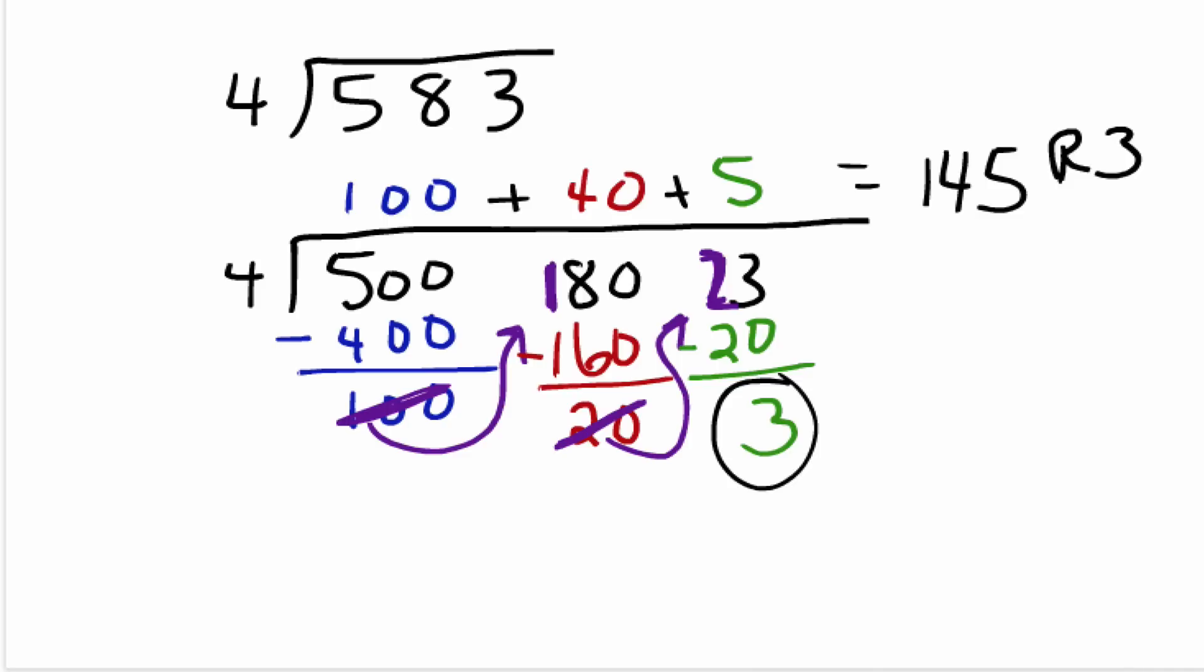Now, let's say we took the 583. So I'm going to do 500, 80 and 3 and divide by 4. And we do it a different way.